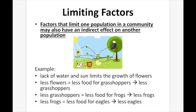Factors that limit one population in a community may also have an indirect effect on another population. For example, a lack of water and sun limits the growth of flowers, which decreases the amount of flowers. Less flowers equals less food for grasshoppers, which means less grasshoppers. Less grasshoppers equals less food for frogs, which means less frogs. And less frogs equals less food for eagles, which means less eagles.